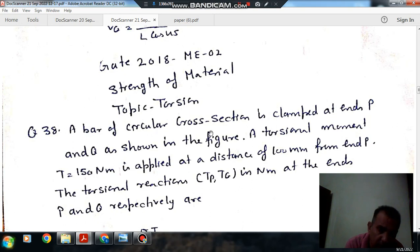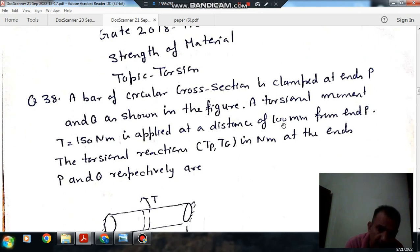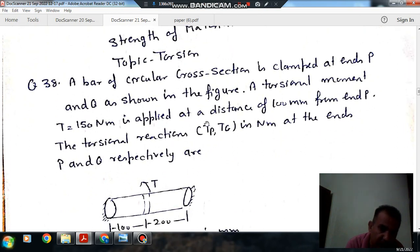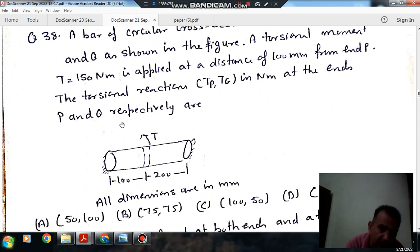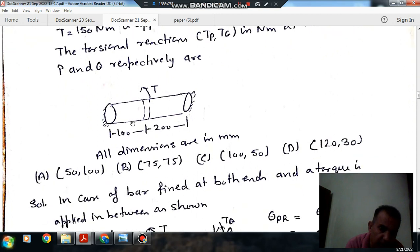A bar of circular cross section is clamped at ends P and Q as shown in the figure. A torsional moment T equal to 150 Nm is applied at a distance of 100 mm from end P. The torsional reactions Tp and Tq in Nm at ends P and Q respectively are: